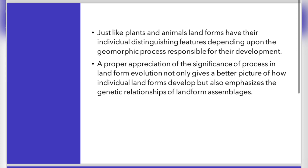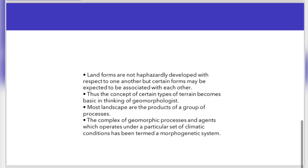Assemblage means a combination of landforms, so characteristic assemblage of landforms means a combination of landforms created by the agent of denudation in that area. For example, in a coastal area, waves create their own assemblage of landforms like cliffs, beaches, sandbars, shoals, etc.